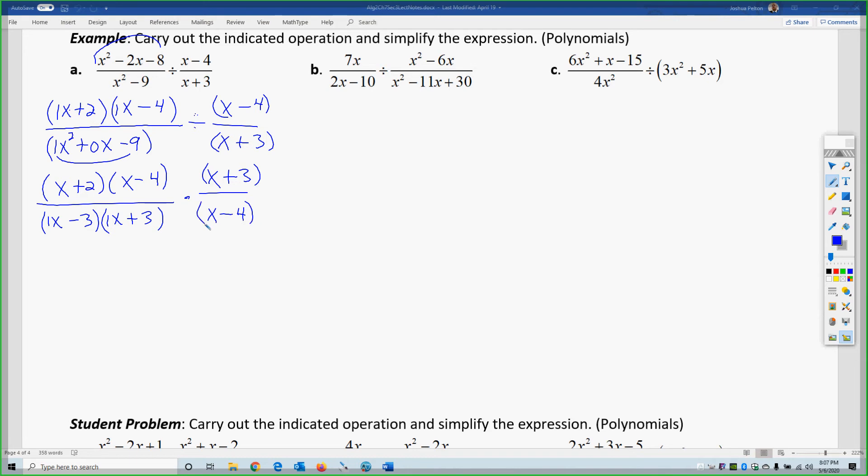So copy, dot, the divide comes into a multiply, and then flip, x plus 3, x minus 4. So as we know from multiplication on the previous section, it's just one continuous fraction all the way across, because when you multiply, you multiply straight across. So as a result, the x minus 4s cancel. The x plus 3 cancels for a final answer of x plus 2 over x minus 3.